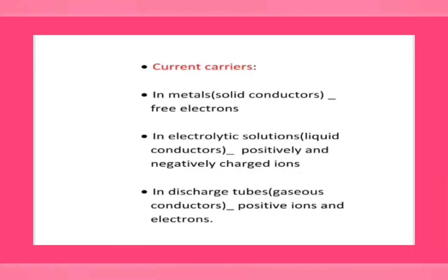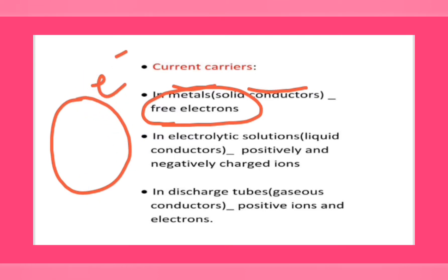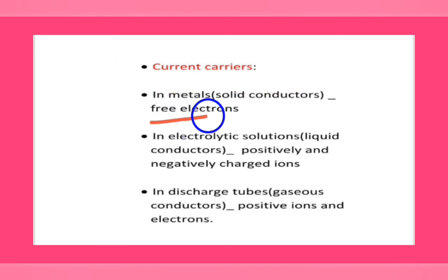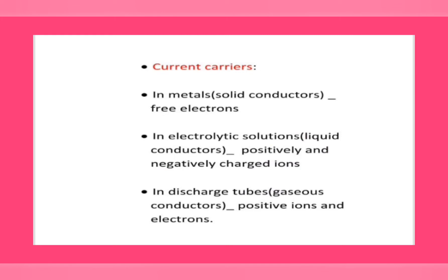Now let's look into the current carriers in solid, liquid, and gaseous substances. In solid conductors — that is in metals — free electrons are the current carriers, as there are many free electrons in the outermost shell of an atom. In electrolytic solutions (liquid conductors), positively and negatively charged ions are the current carriers. In gaseous conductors like discharge tubes, positive ions and electrons are the current carriers.